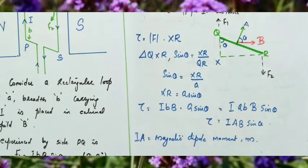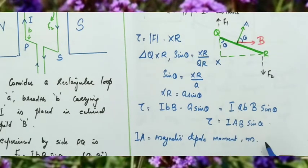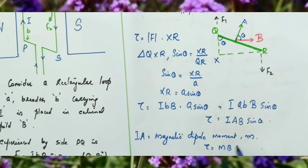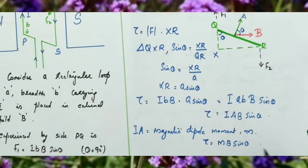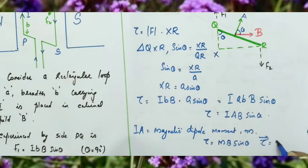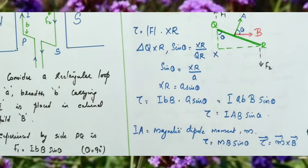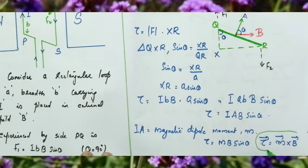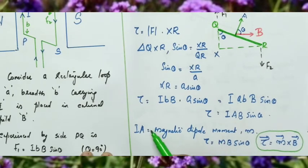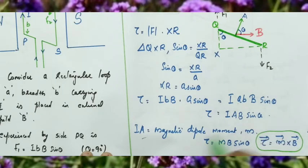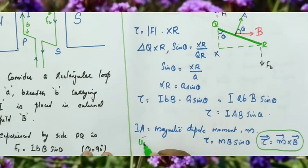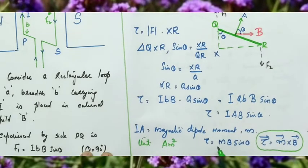This is applicable not only to a rectangular loop but also to a circular loop. So torque equals IAB sinθ, therefore τ = MB sinθ. In vector form, we write τ = M × B. The unit of magnetic dipole moment M is current times area, which is ampere meter squared.